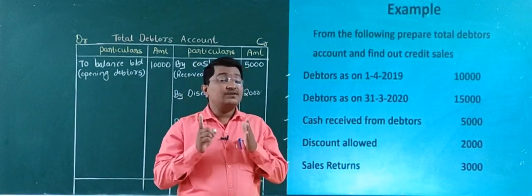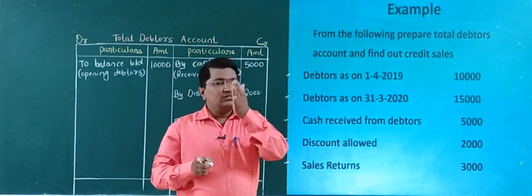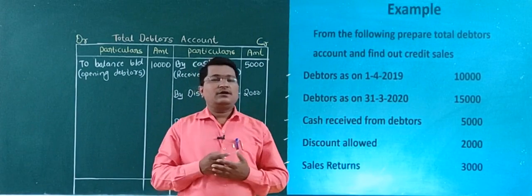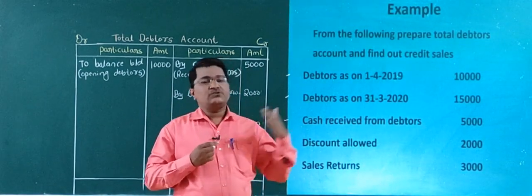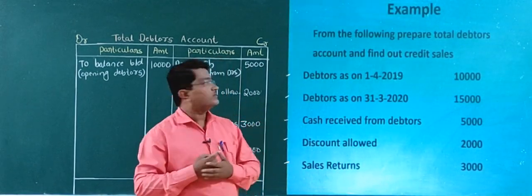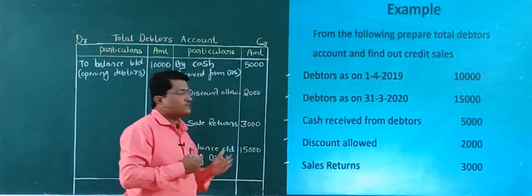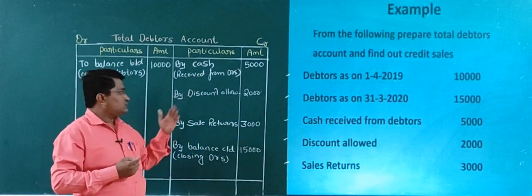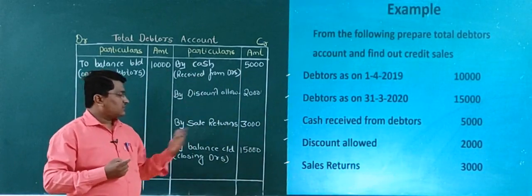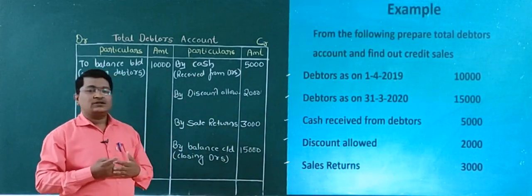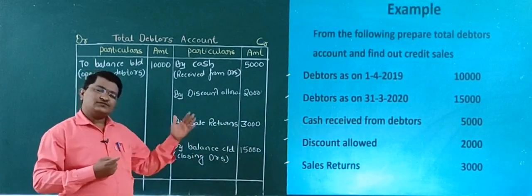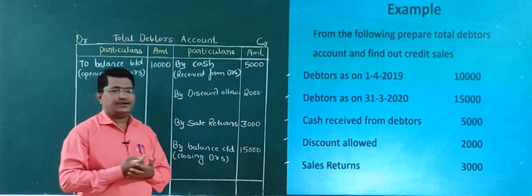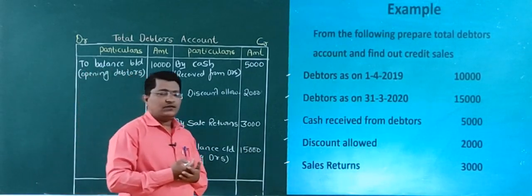Opening debtors and credit sales are recorded at the debit side, and the rest of the information — cash received, discount allowed, sales return, bad debts, and closing debtors — we need to record at the credit side.